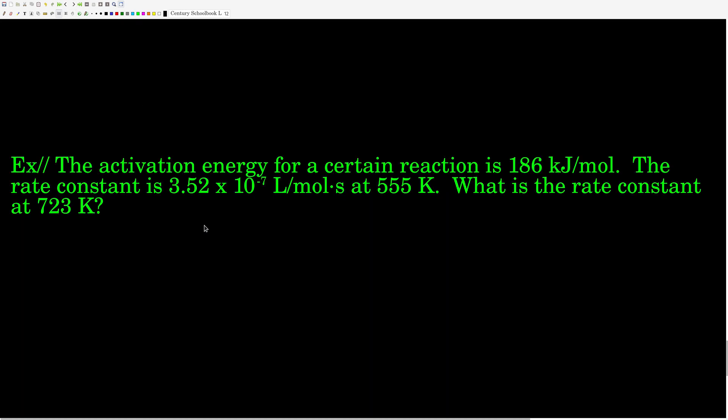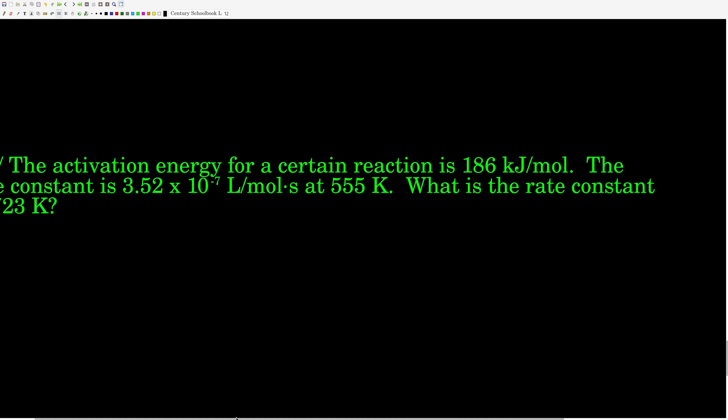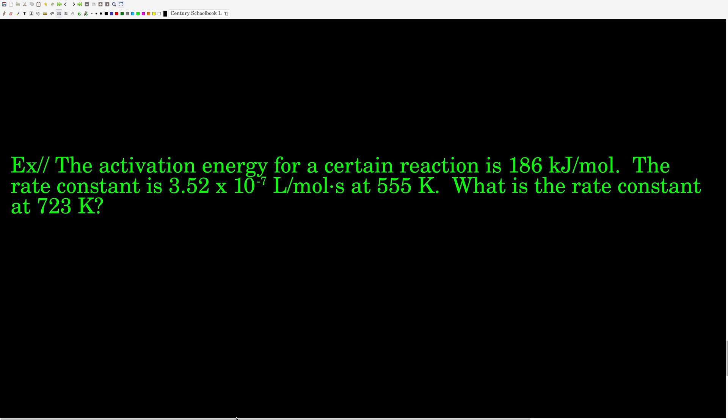Here's an example doing just that. We're giving the activation energy for a certain reaction as 186 kilojoules per mole. Rate constant is 3.52 times 10 to the minus 7 liters per mole second at this temperature in Kelvin. What's the rate constant at 723 Kelvin? Why don't you guys go ahead and work this out? Watch out for units here. This is kilojoules per mole, which is a really common unit for activation energies. But, because of the value of R that we use, you should either convert this to joules per mole, so multiply by 1,000, or you can convert R to kilojoules per Kelvin mole by dividing by 1,000.